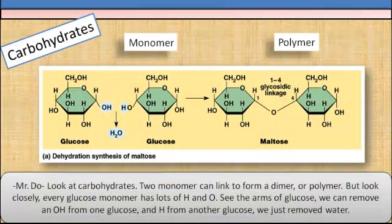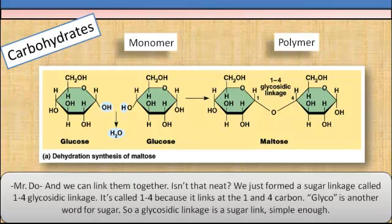Look at carbohydrates. Two monomers can link to form a dimer, or it can be a polymer. But look closely, every glucose monomer has a lot of hydrogen and oxygen. See the arms of the glucose? We can remove an OH from one glucose and a hydrogen from another glucose. We just remove water, and we can link them together.